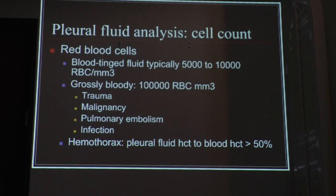If you have red blood cells, you think about either disease, trauma, malignancy, pulmonary embolism, or an infection. And for hemothorax, the pleural fluid hematocrit is actually close to the body's hematocrit. So that's another test that we usually send when we're confronted with suspecting a hemothorax.